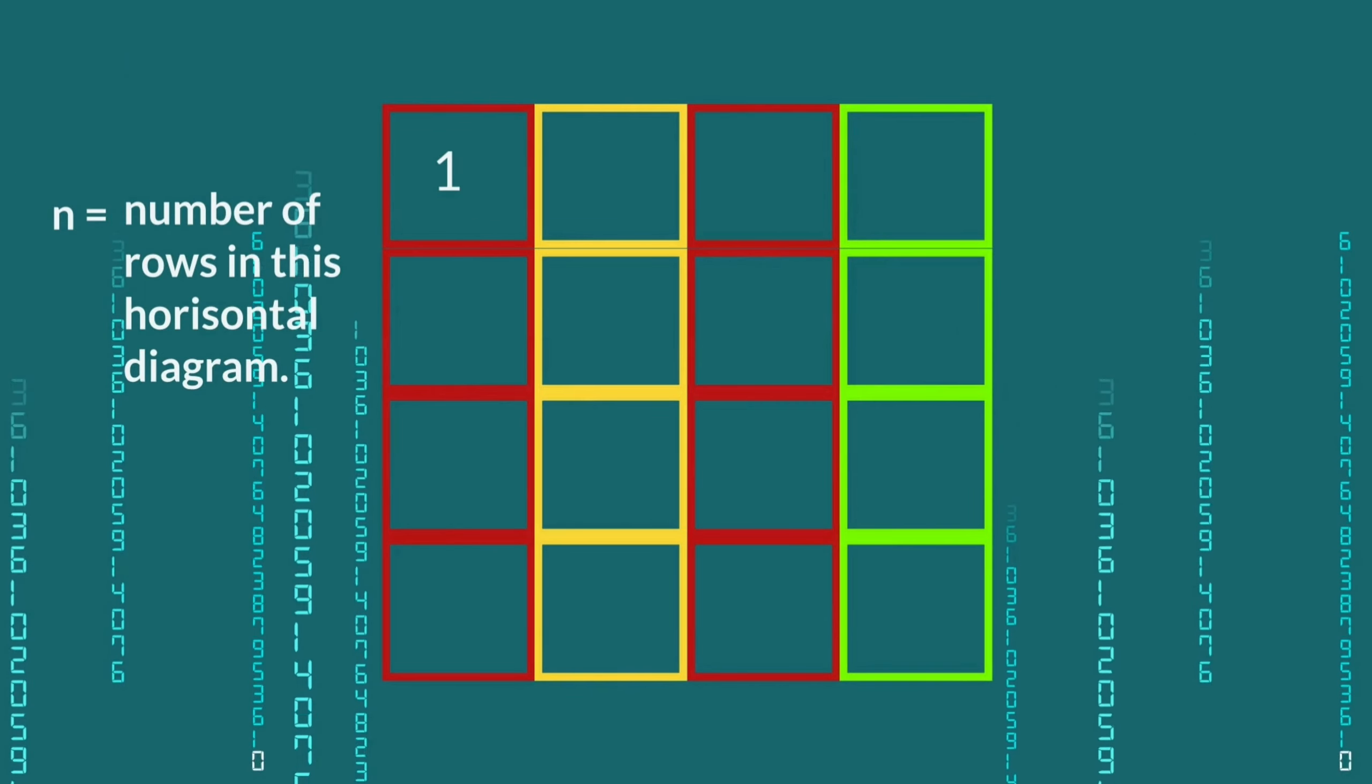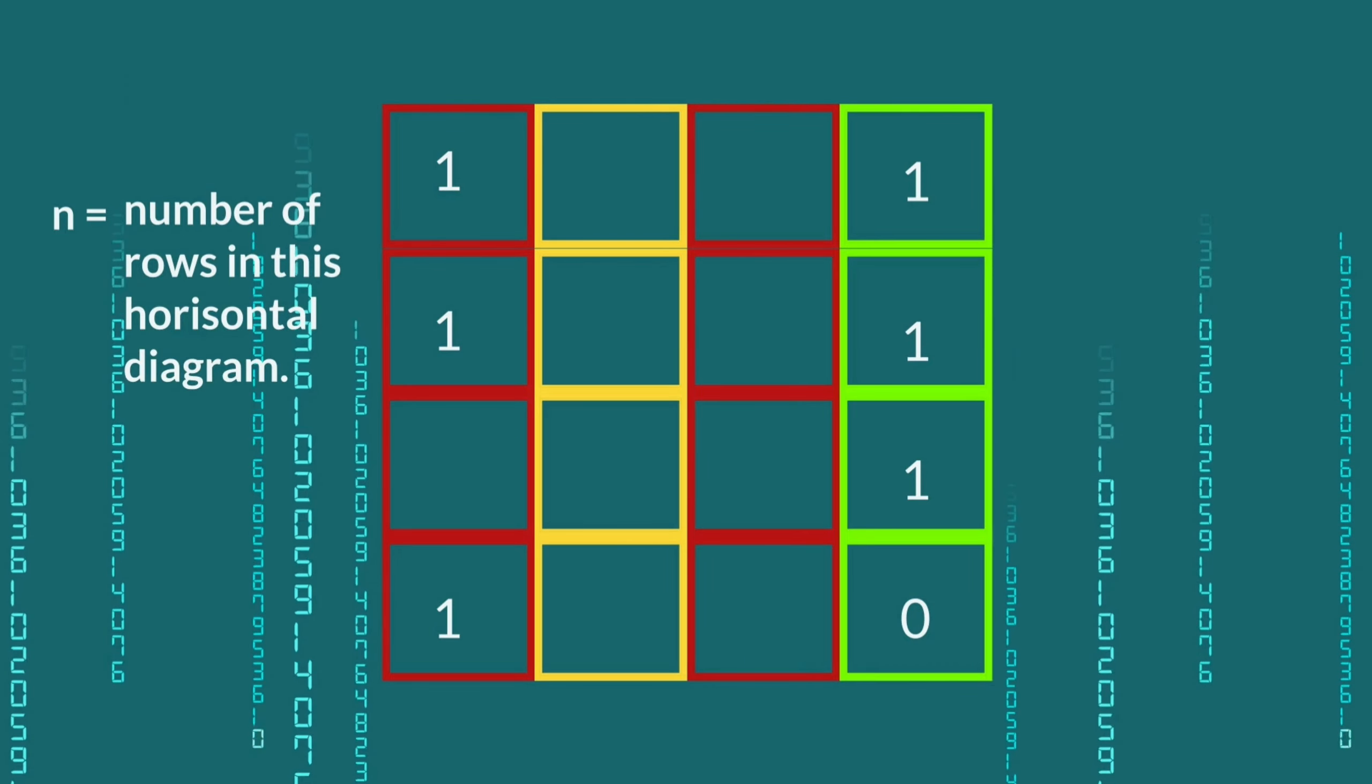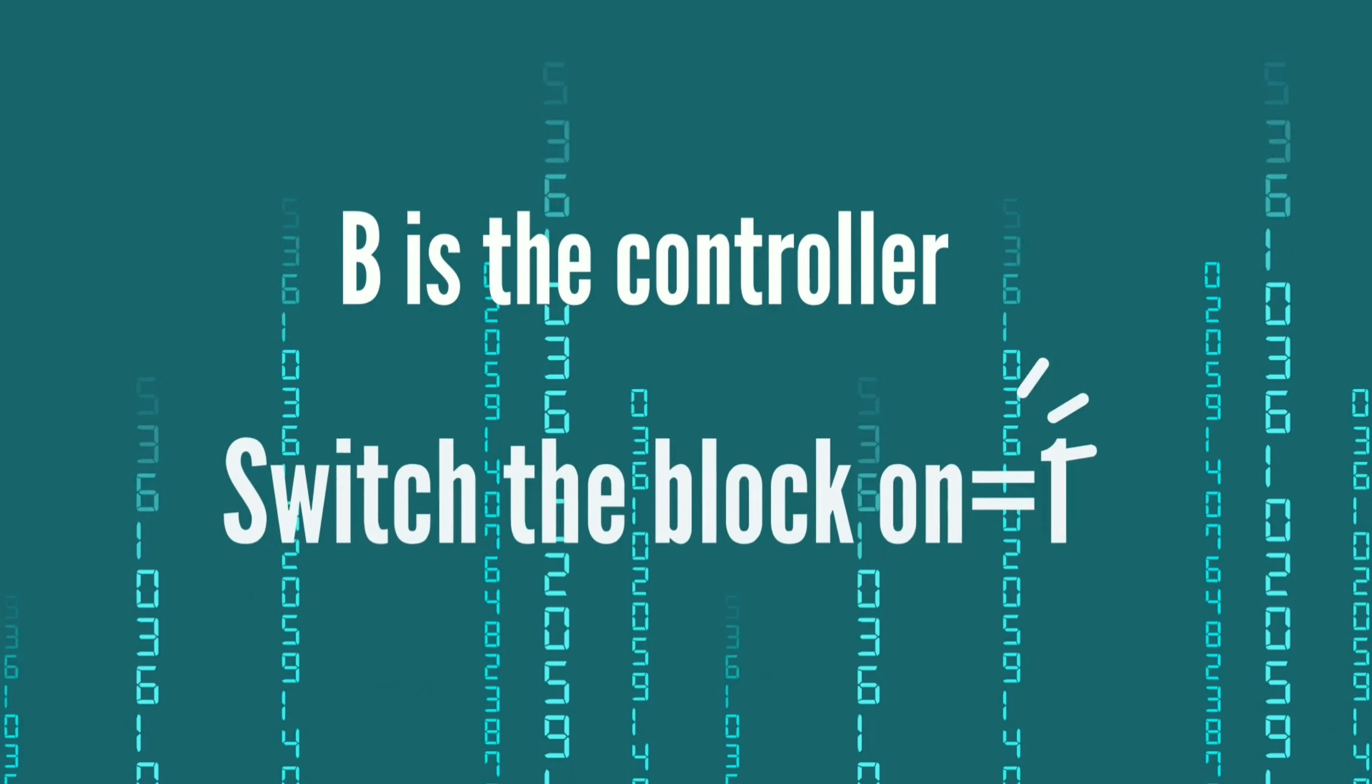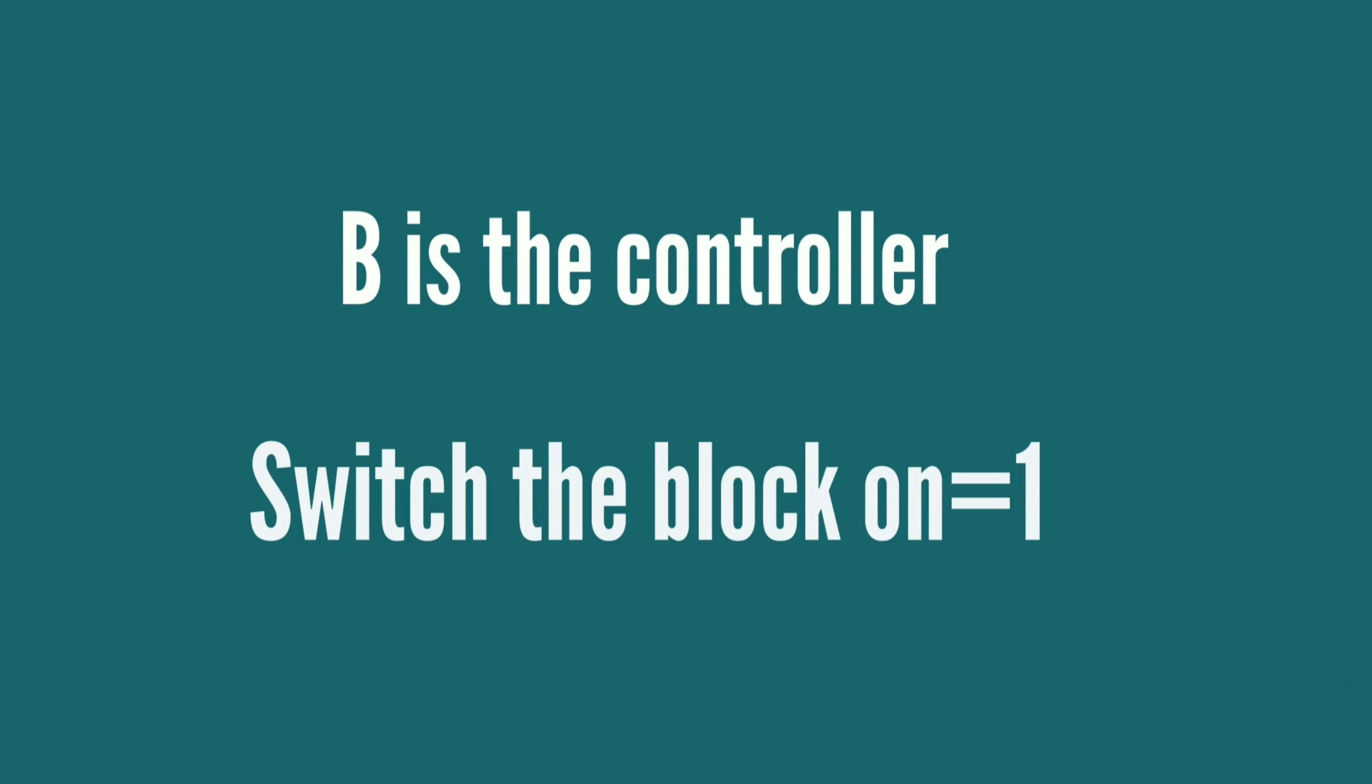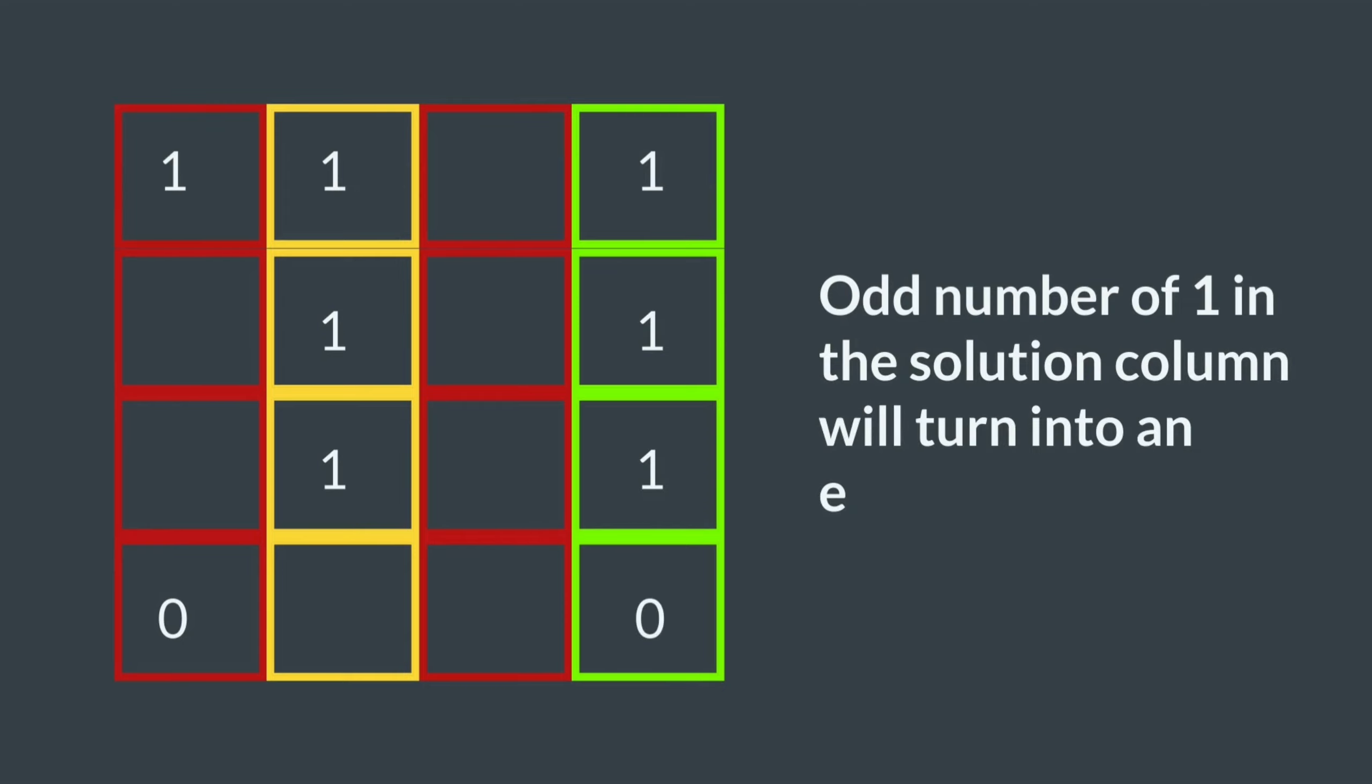In this example, N equals 4. However, the number of selected fields by A green is still odd as always for any block. In this case, 3. Also here, B is the controller. He has chosen to switch the block on equal 1. This means that for this segment, an odd number of 1 in the solution column will turn into an even number of 1, as publicly displayed towards a man in the middle. In this case, however, originally all solutions have been 0, which is even. Because the non-controller, here A, always, in this case, inverts an odd number of solutions, there will be an odd number of 1 as solutions for this segment publicly displayed.